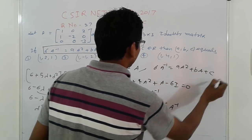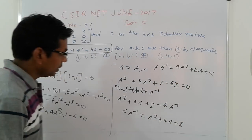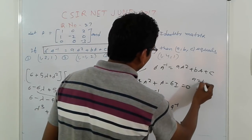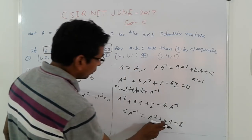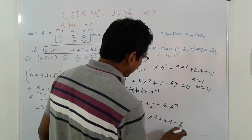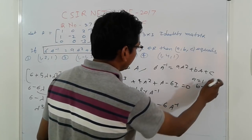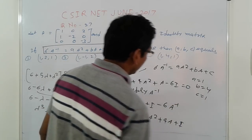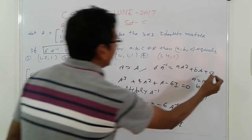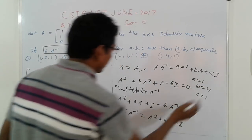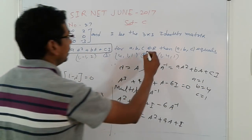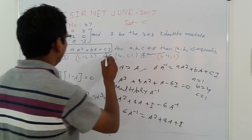So comparing with 6A⁻¹ = aA² + bA + cI, we get the coefficient values: a = 1, b = 4, and c = 1. That is, a = 1, b = 4, c = 1.